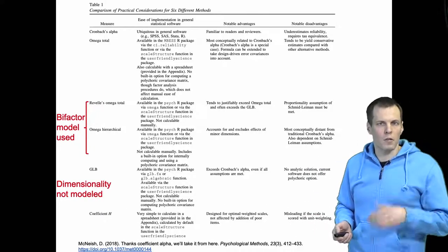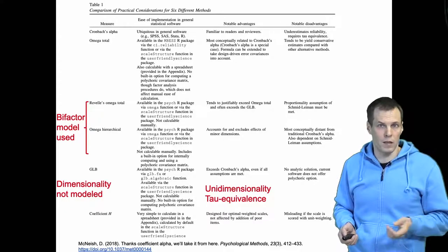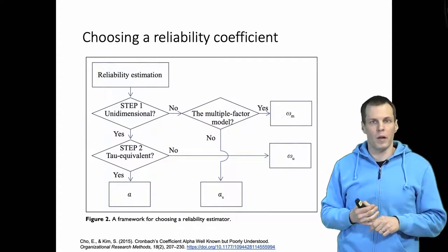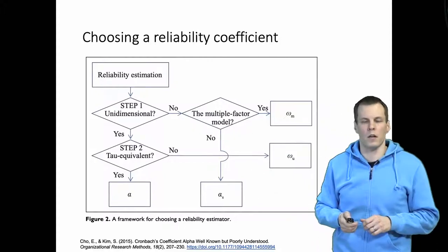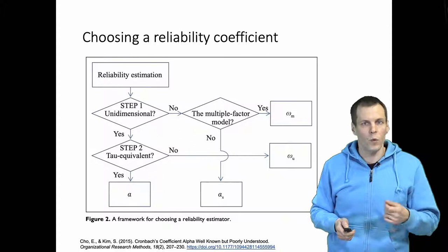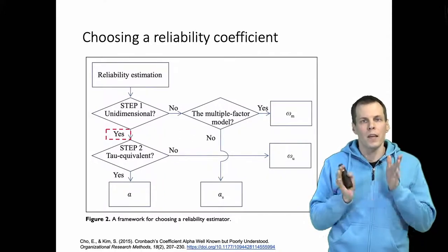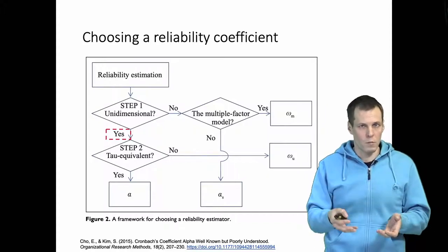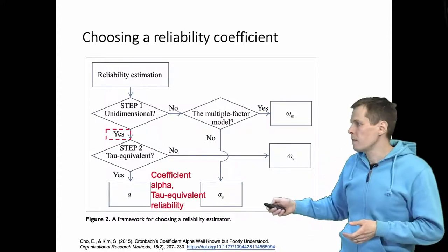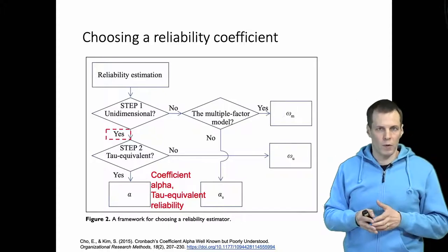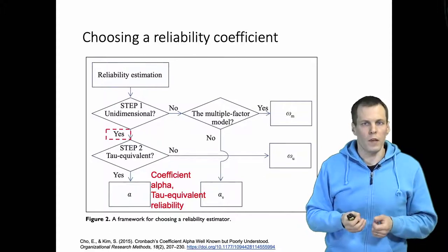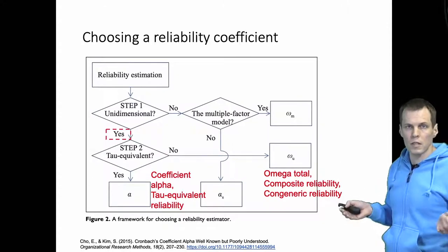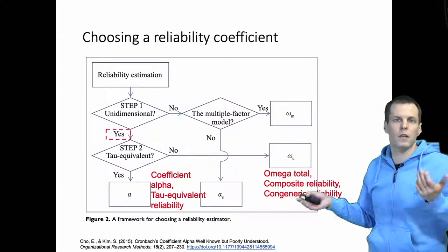The two important things to consider when choosing coefficients are tau equivalence and unidimensionality. Cho and Kim present a workflow: first, is the scale unidimensional? If yes, then check tau equivalence — are factor loadings the same for all items in a well-fitting single factor model? If yes, use coefficient alpha. If no, use omega total, composite reliability, or congeneric reliability — different names for the same coefficient. So it's fairly simple: either alpha or congeneric reliability, depending on the factor loadings.